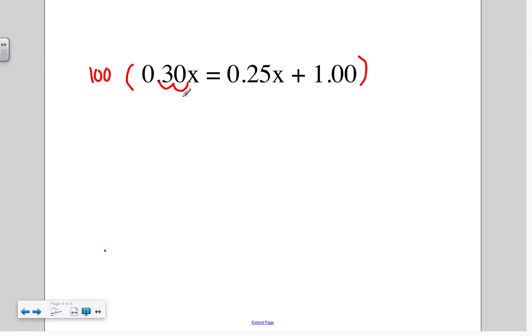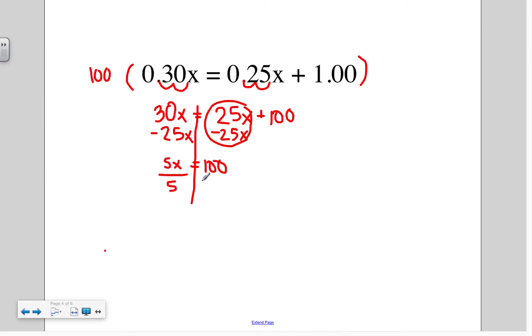So what we're really doing is moving our decimal two places. So this becomes 30x equals, two places, 25x plus 100. Alright, so then we want to get x alone on one side. I'm going to draw my line. I'm going to subtract 25x because if I subtract from this side, I will end up with a positive x, which is always my goal. So I have my zero pair there. I have 5x equals 100. And if I divide both sides by 5, I get x equals 20.